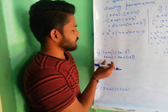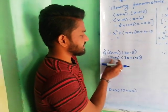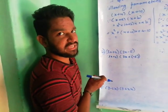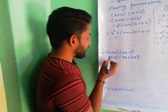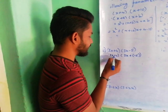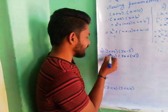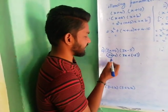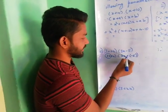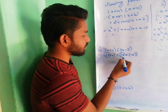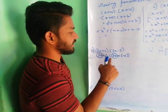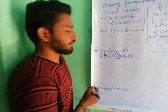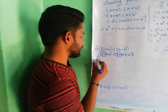Here it looks like x plus a into x plus b. Yes or no? But here you have to keep it in your mind: x value is 3x. So it is in the x plus a into x plus b format.